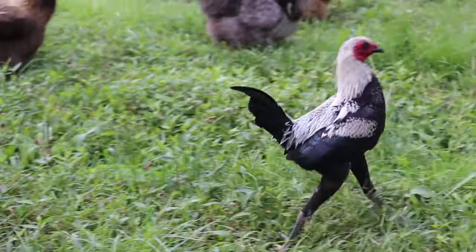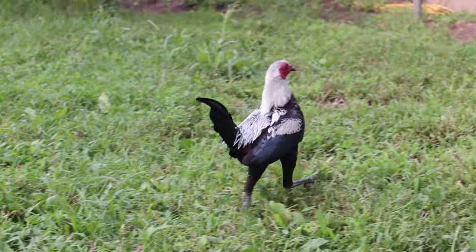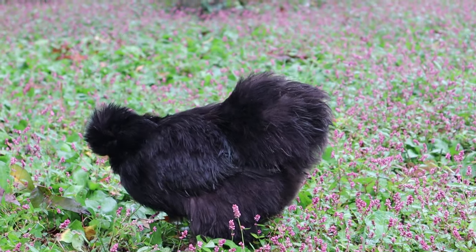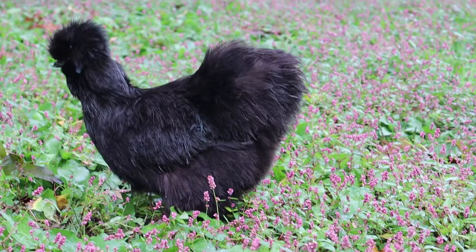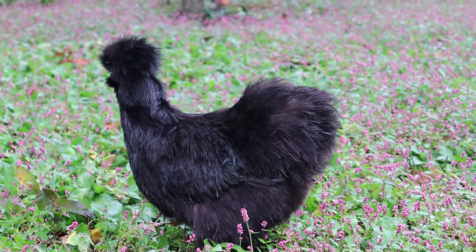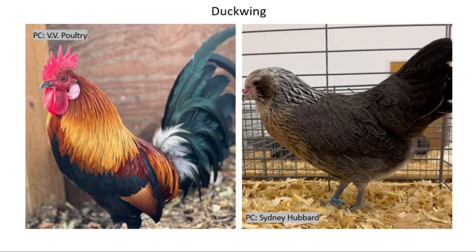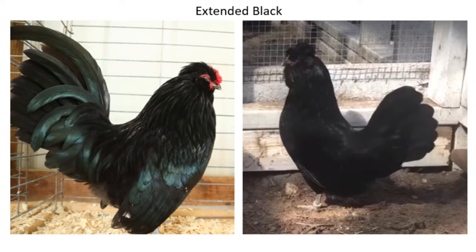As of 2023, there are five known E-Alleles, each with their own gene symbol and name, and you have probably already heard of a lot of them before. These alleles are called Duckwing, Wheaten, Partridge, Extended Black, and Birchen.